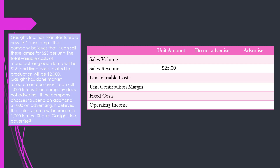We have all of our information: Gaslight intends to sell these lamps for $25 a piece. The unit variable cost to produce each lamp is $15, therefore each lamp that we sell will contribute $10 towards covering our fixed costs. Our unit contribution margin is $10. At a base level, no matter what — advertise or not — there are $2,000 of fixed costs that Gaslight has to pay. Our proposed sales volumes are 1,000 lamps if we choose not to advertise, or 1,200 lamps if we do advertise.